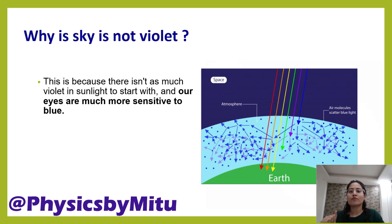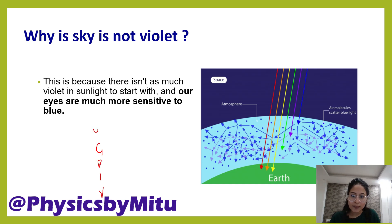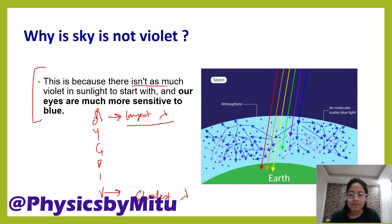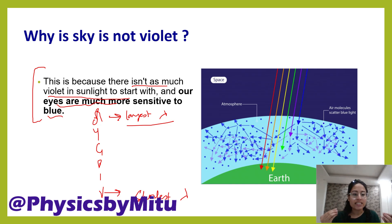But the question arises: then why not violet? Violet has the shortest wavelength. The first reason is that there is not much violet present in sunlight. The second reason is that our eyes are more sensitive to blue and less sensitive to violet. Therefore, we see blue color.